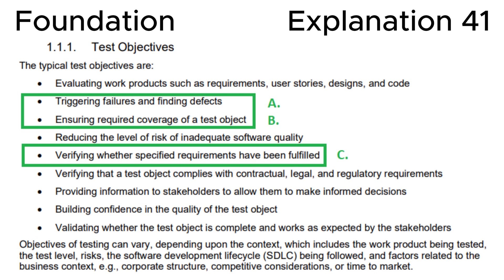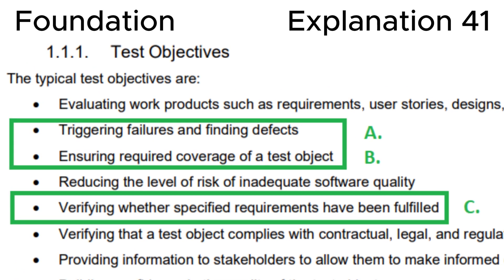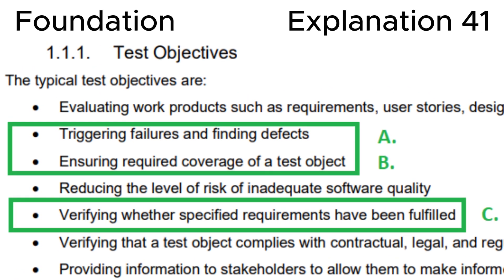Finally, let's look at section 1.1.1, Test Objectives, in the ISTQB syllabus. The second point is triggering failures and finding defects — fully consistent with the incorrect answer A. The third point is ensuring required coverage of a test object — fully consistent with the incorrect answer B. The fifth point is verifying whether all specified requirements have been fulfilled — fully consistent with the incorrect answer C.